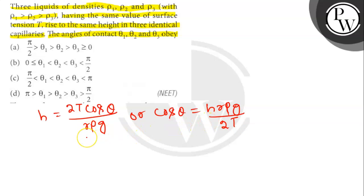Now given that H, T and R are constants for all three liquids and P1 is greater than P2 is greater than P3.